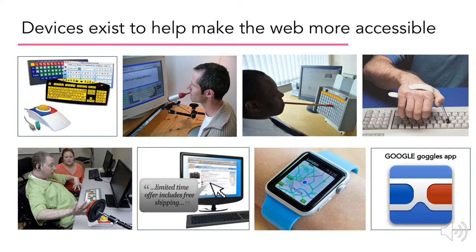Several devices exist to help make the web more accessible. On the top left, you can see examples of ancillary devices like keyboards and mouse pads that have distinctive features for users with impairments. The next several pictures indicate other devices that allow users to interact with web content without full mobility. The second image in the bottom row depicts screen reading software, which reads both visible and invisible web content such as HTML elements to users with no or low vision.